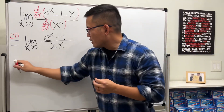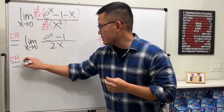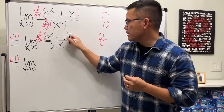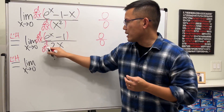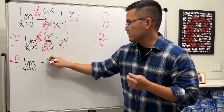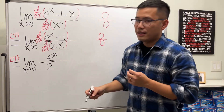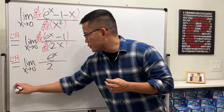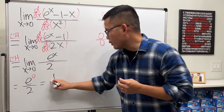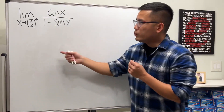Therefore, use L'Hôpital's Rule again. Differentiate the top and differentiate the bottom. On the top we get e^x, and on the bottom the derivative of 2x is just 2. Finally, plugging in zero, we have e to the zero over 2, which is just one half. Done.